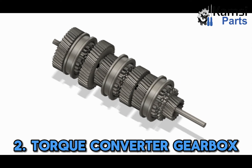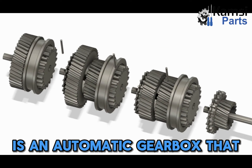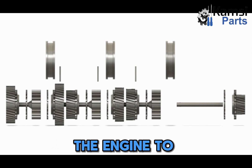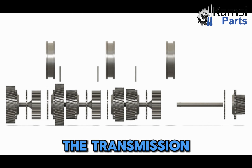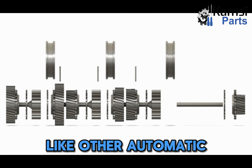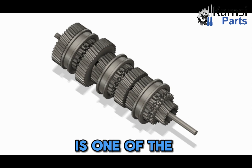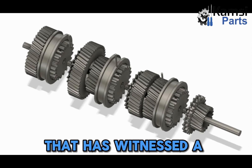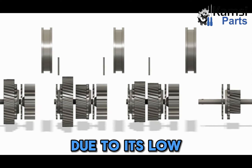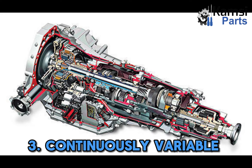2. Torque converter gearbox: the torque converter gearbox is an automatic gearbox that utilizes fluid coupling to transfer power from the engine to the transmission. This gearbox doesn't require a clutch pedal to shift gears. Like other automatic transmissions, the torque converter is one of the traditional gearboxes that has witnessed a decline in its popularity in recent times due to its low fuel efficiency and high maintenance cost.